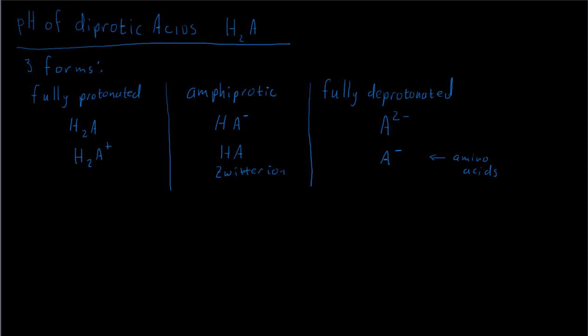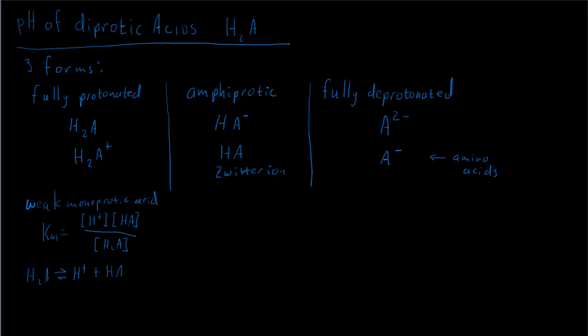Let's work through one of these problems. For each of these, there's a different set of approaches. In the fully protonated form, we treat this as a weak monoprotic acid — we're going to assume that only the first proton comes off. The second one might come off just a tiny, tiny amount, but it's really not going to affect the pH. This is based on the Ka1 expression. We write the dissociation of the acid: H2A dissociates, donating its first proton, leaving us with H⁺ and HA⁻. That's our Ka1 expression.